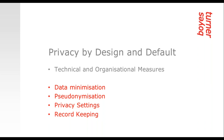Privacy by default requires controllers to implement appropriate technical and organizational measures to ensure that by default only personal data which is necessary for each specific purpose of the processing is processed, with limits on storage and accessibility of the data. Privacy test settings will certainly be important. The GDPR also states that adherence to an approved code of conduct or an approved certification mechanism may be used as a way to demonstrate compliance with the requirements.